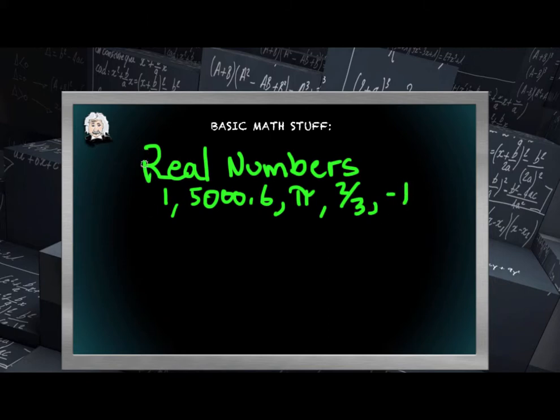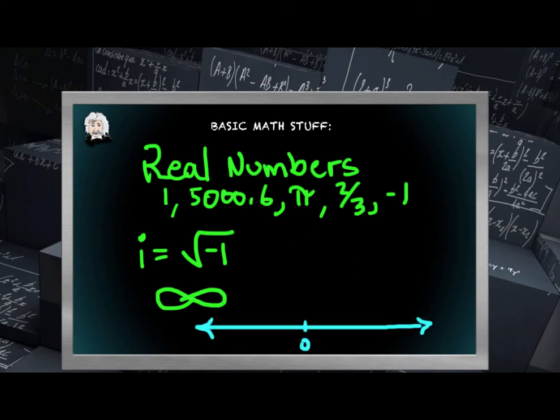The only thing that is not a real number is for example the square root of negative one which we define as an imaginary number or one you're probably more familiar with and seen before is infinity. That is not a real number but just about anything you typically think of as a number is a real number and those real numbers make up a real number line.